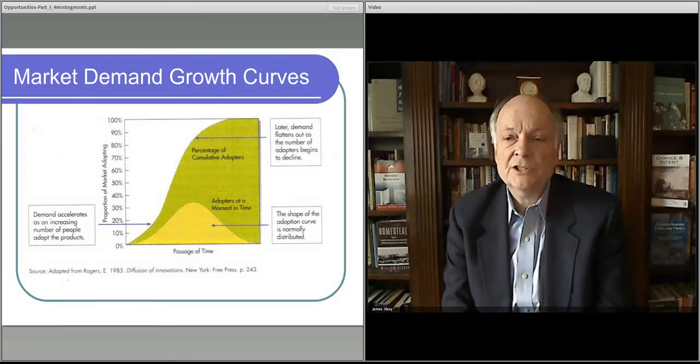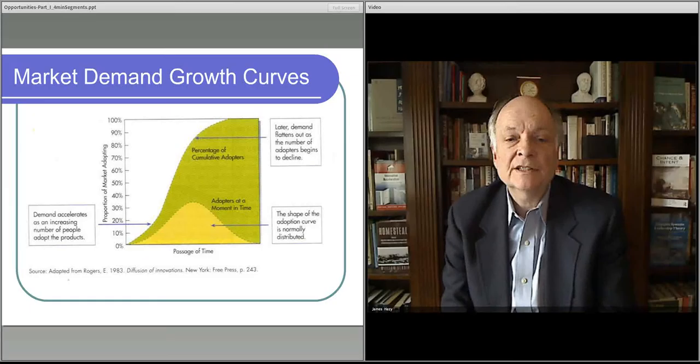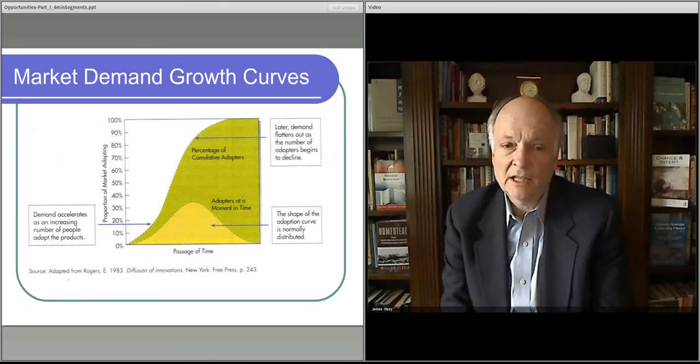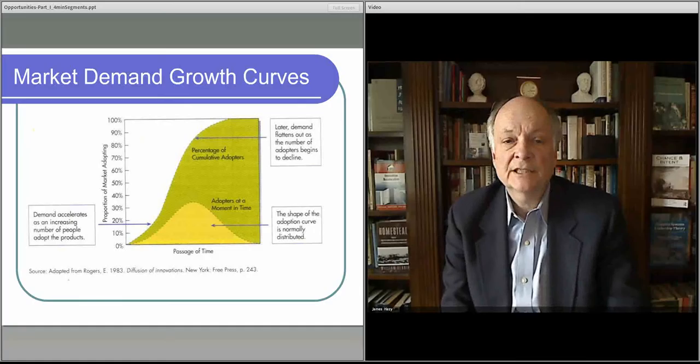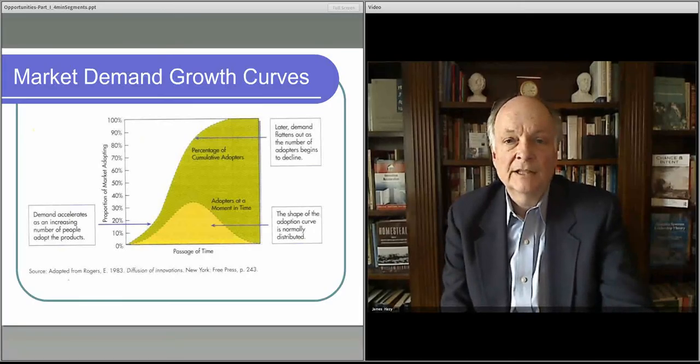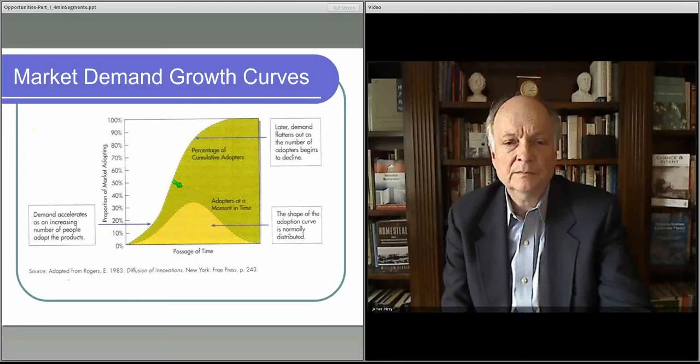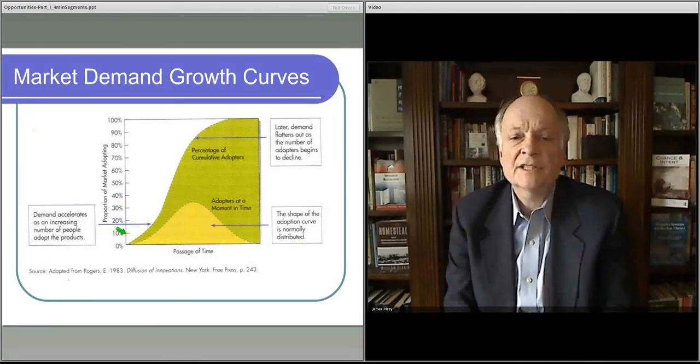You can see in this chart that early on there's a relatively slow adoption of a new product. That's this part way to the far left of the curve here. Let's see if we can get an arrow. This area down here, relatively slow adoption at first.